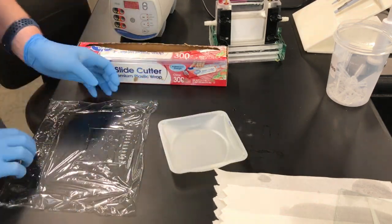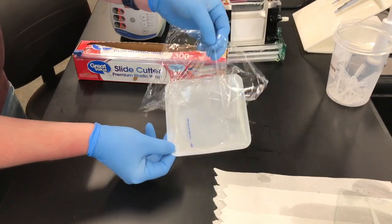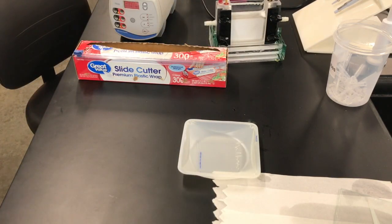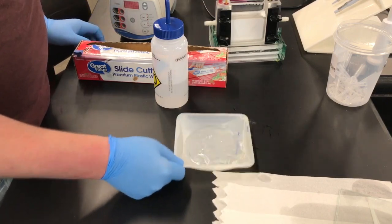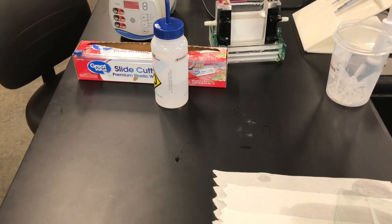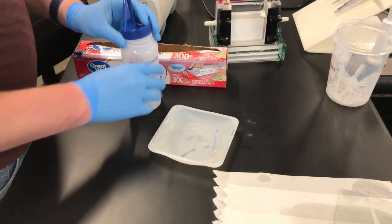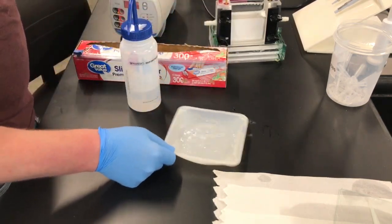Now, get a weigh boat and then flip the saran wrap over in order to transfer it from the saran wrap into the weigh boat. Rinse it off with a little bit of water. You really want to rinse off any of that extra SDS buffer because it will interfere with the next part.